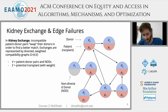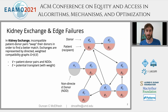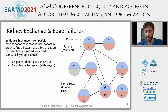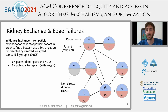Kidney exchange is a process where patients in need of a donor kidney can essentially swap their donors. If my mother needs a kidney and I want to donate one to her but I'm incompatible, I might pair up with her and go into an exchange where we can swap our compatible donors. From a math perspective, this is a packing problem on a directed graph where each node represents an incompatible pair between a donor and a patient, and each edge corresponds to a potential transplant.